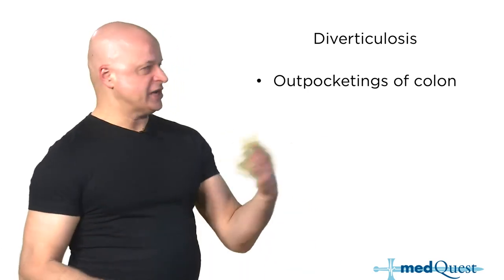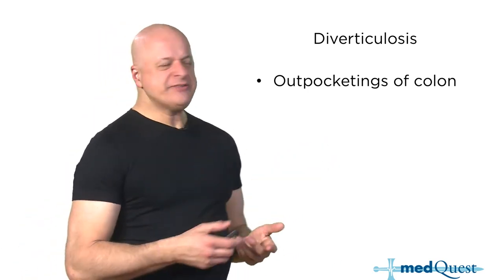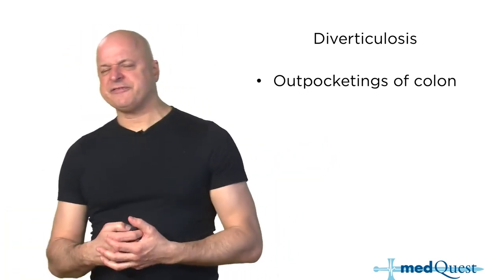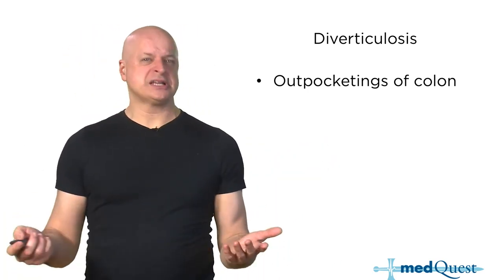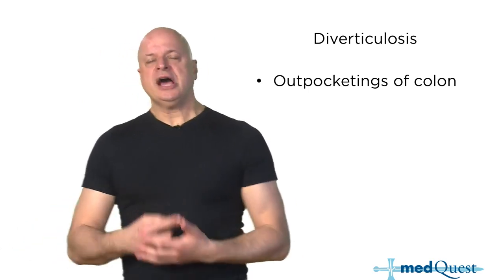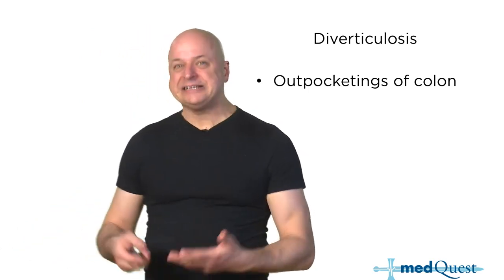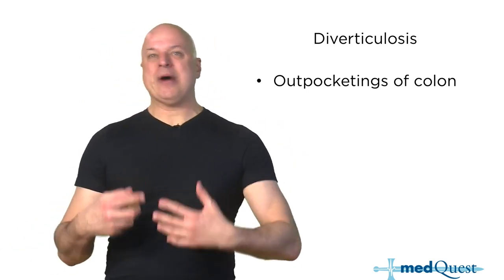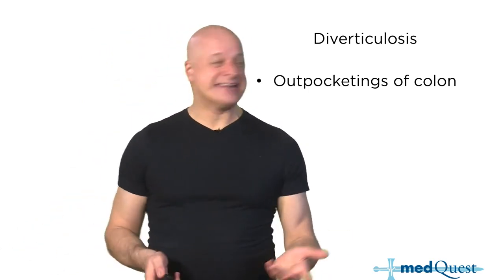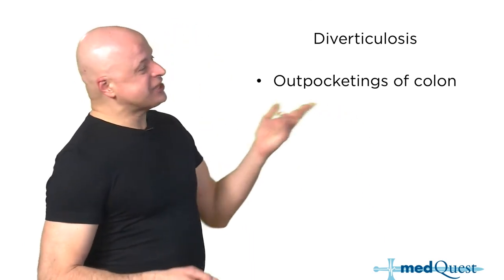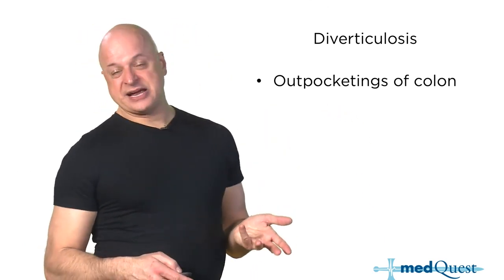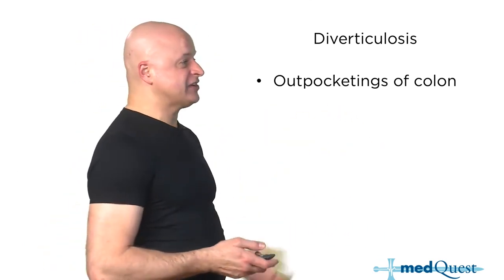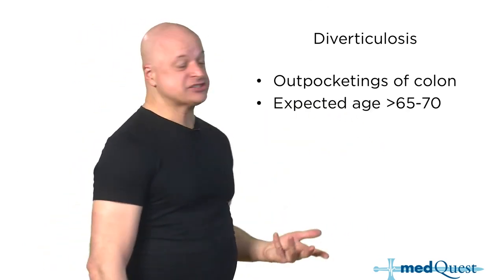Diverticulosis is so common a feature of the human condition on a meat, fat-filled, disgusting Western diet that almost everybody by the time they're 60, 70, 80 is going to have these outpocketings of their colon.